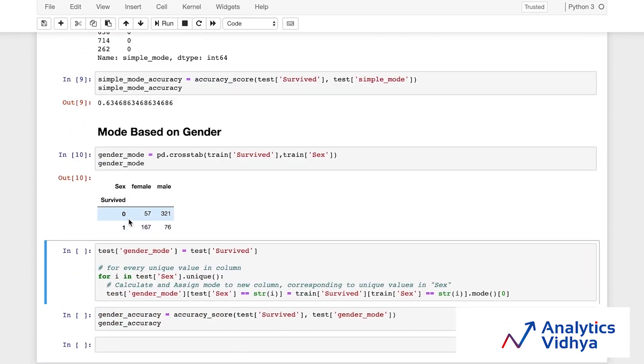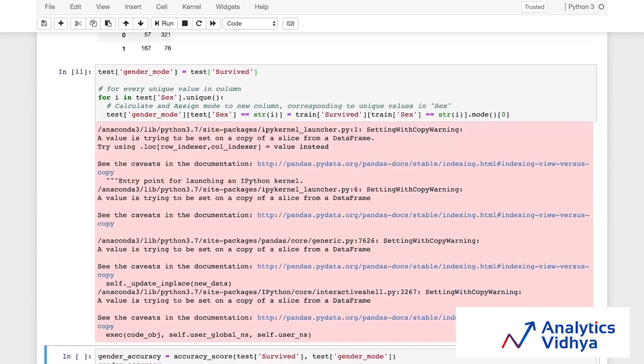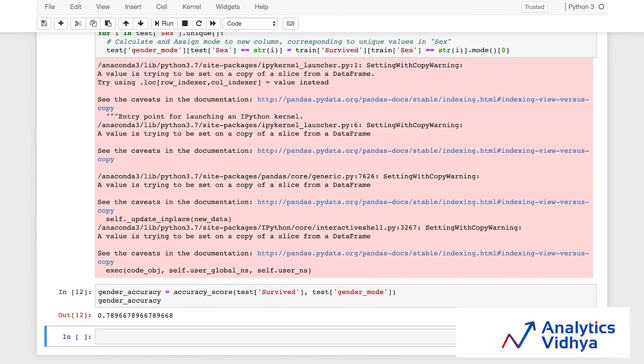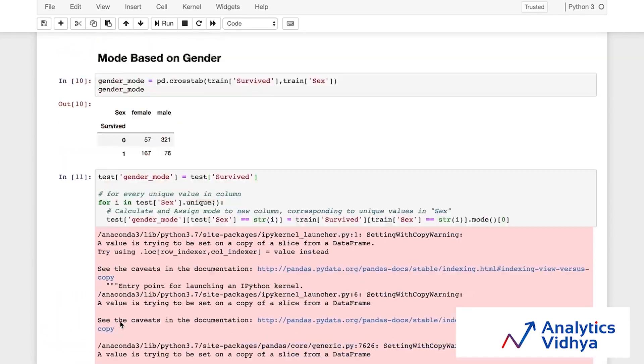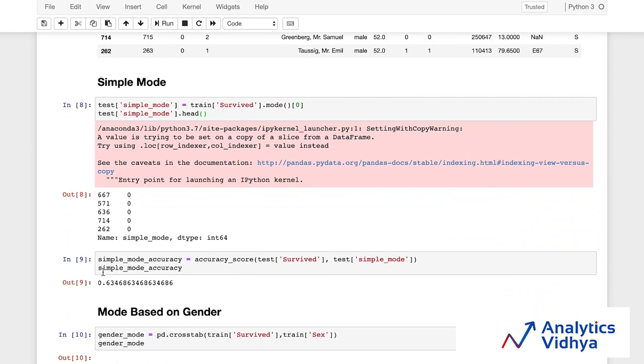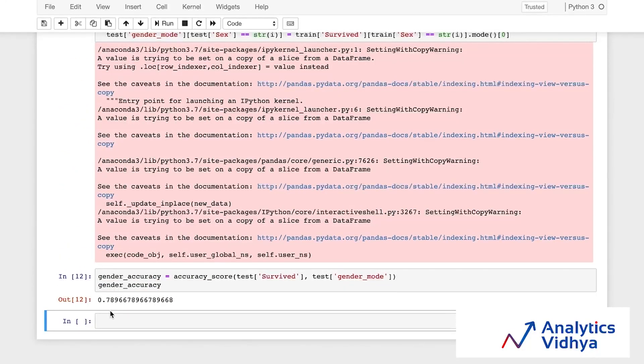Now let's move to a gender-based mode. As you can see, the mode for females is going to be one because 167 out of 210 plus females actually survived. Whereas in case of males, only 76 males survived and 321 of them died. The mode for females would be one, mode for males would be zero. I go and make those changes. I look at what is my accuracy after this and my accuracy of the model reaches to 78.9%. It jumped from 63%, which was by just using overall mode, to 78.9% by just using gender as a segmentation variable.